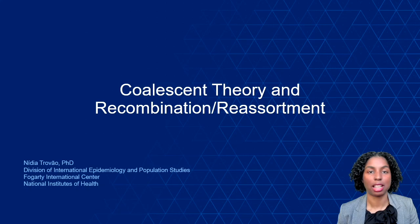In this session, we will talk about the coalescent theory to model demographic processes and how recombination or reassortment events can affect phylogenetic inferences.